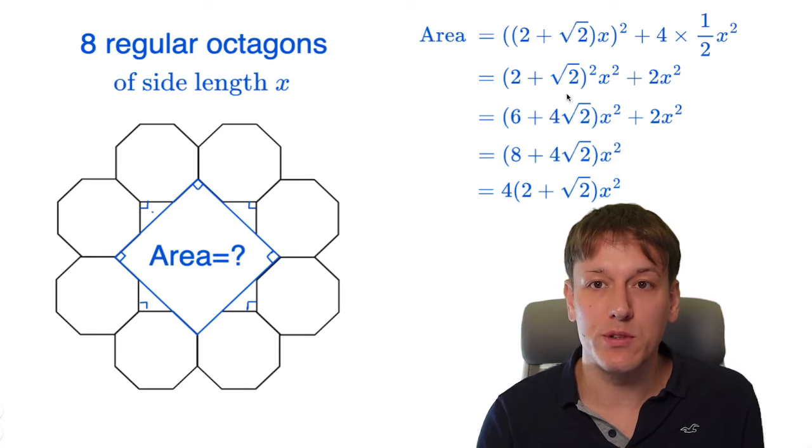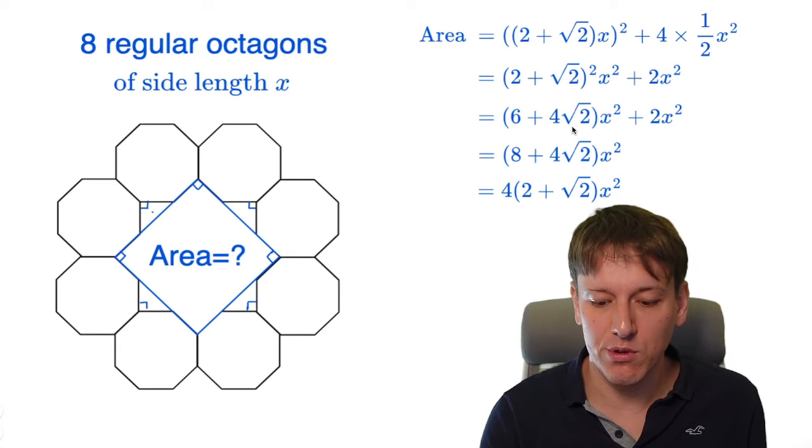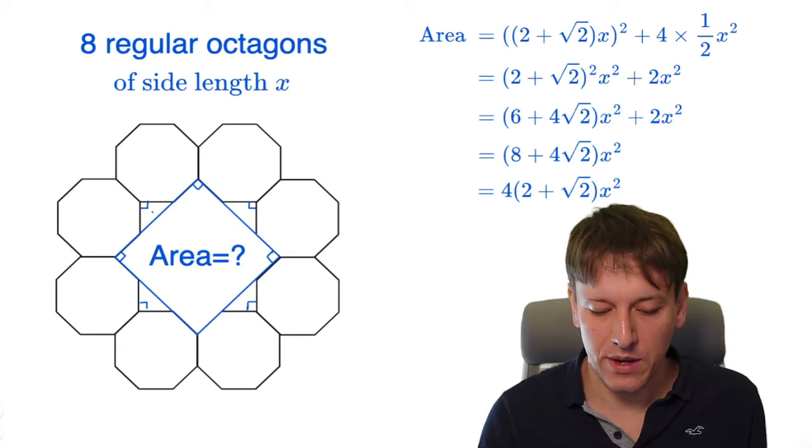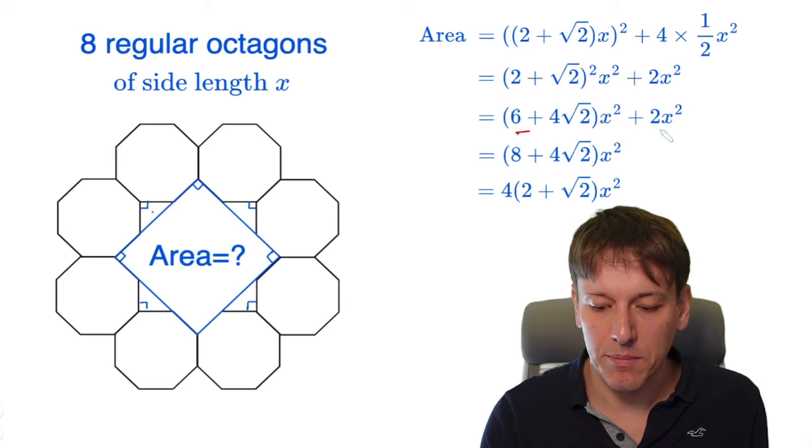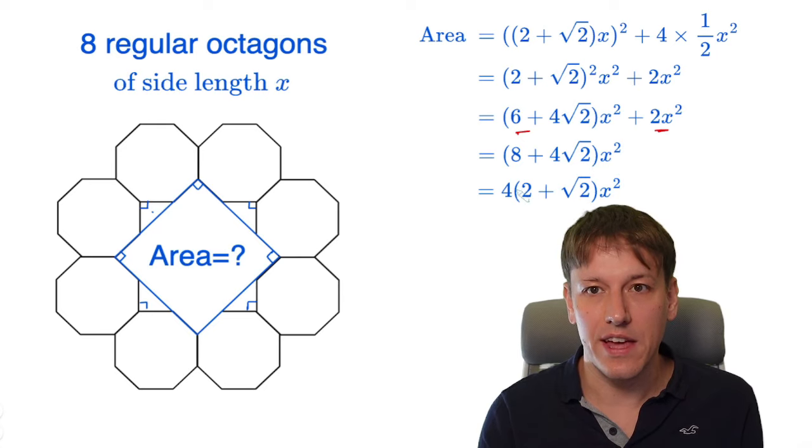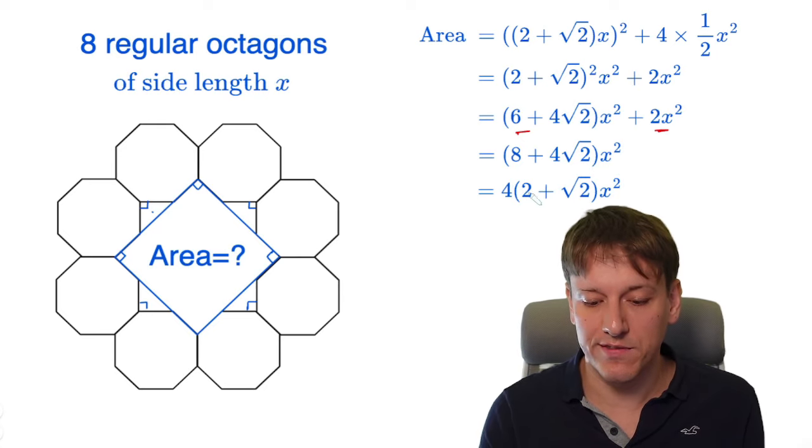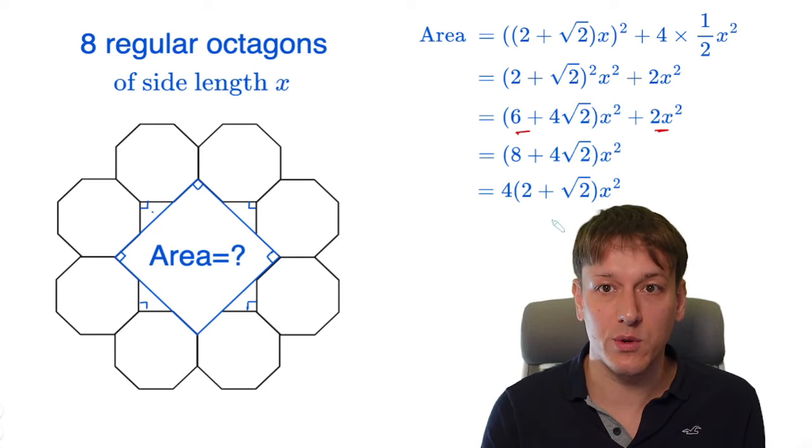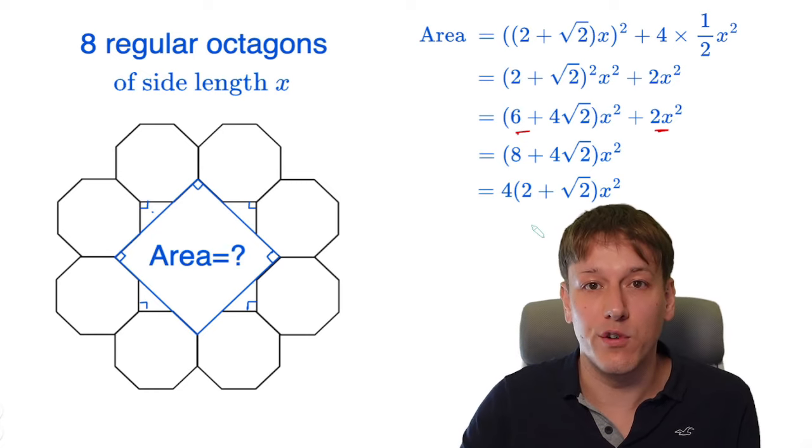So we can replace the 2 plus root 2 squared with 6 plus 4 root 2, and then I've got a 6x squared here. So I can combine that with the 2x squared here to get 8x squared, and write this as 8 plus 4 root 2x squared, and then I can factorize out a 4 to get 4 times 2 plus root 2x squared for the final form of the answer.